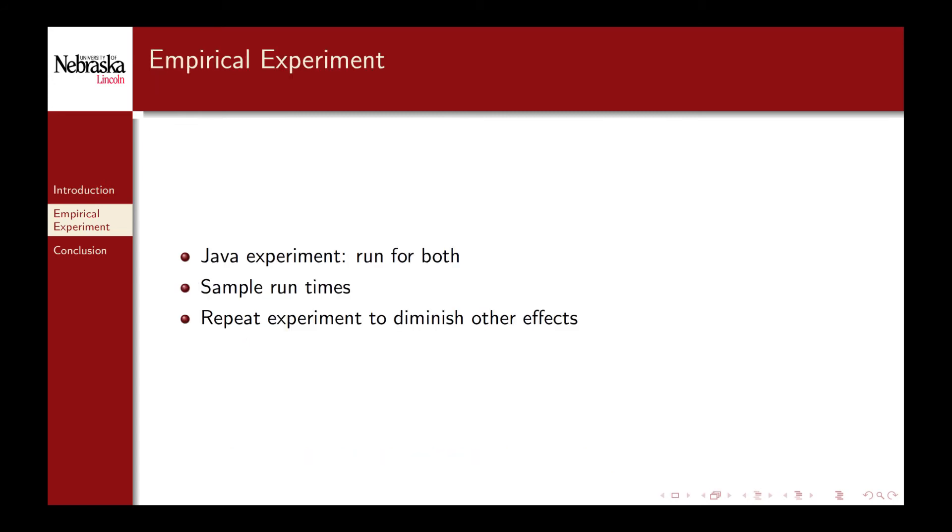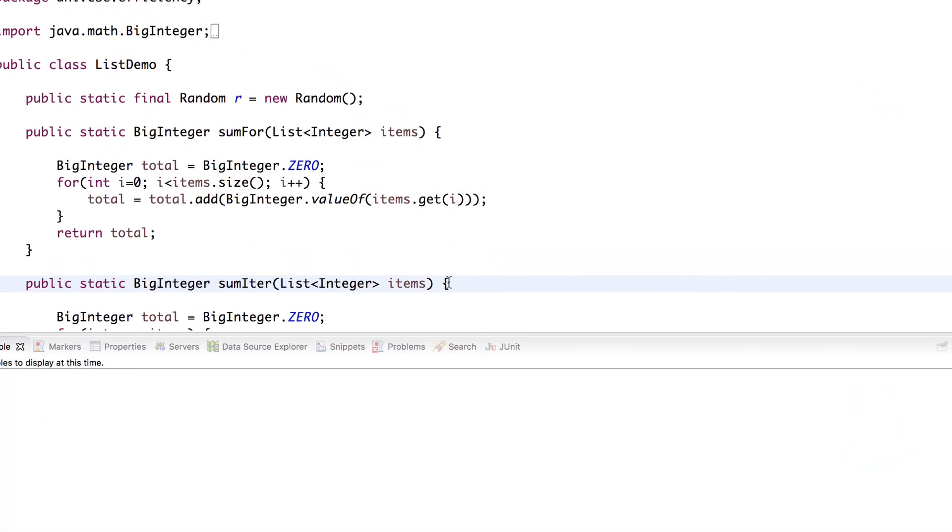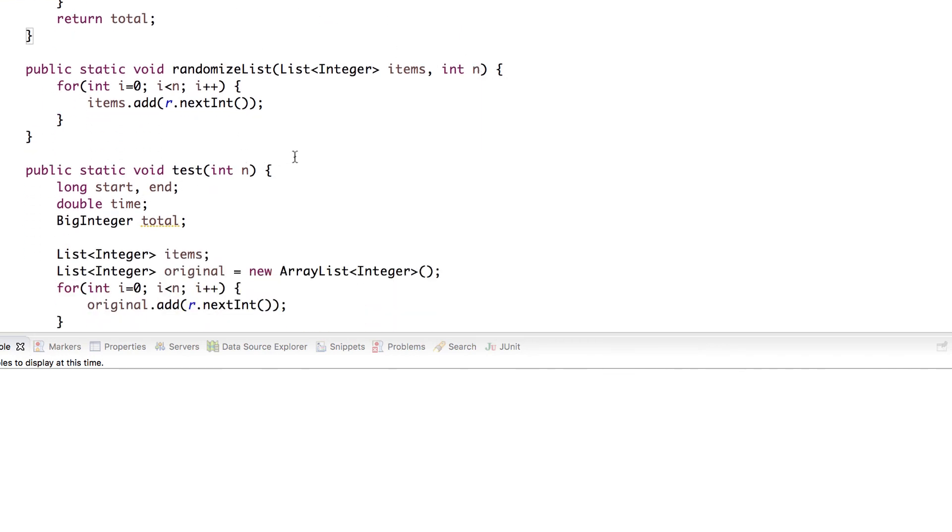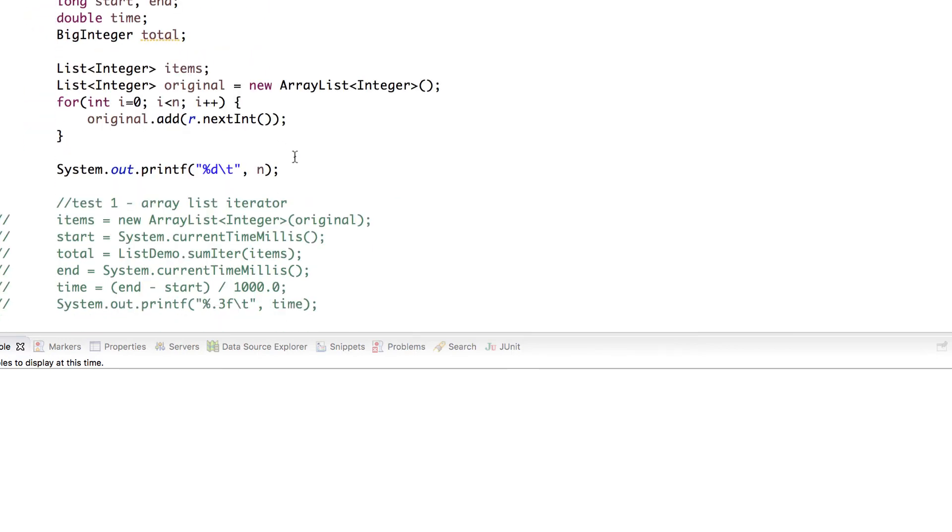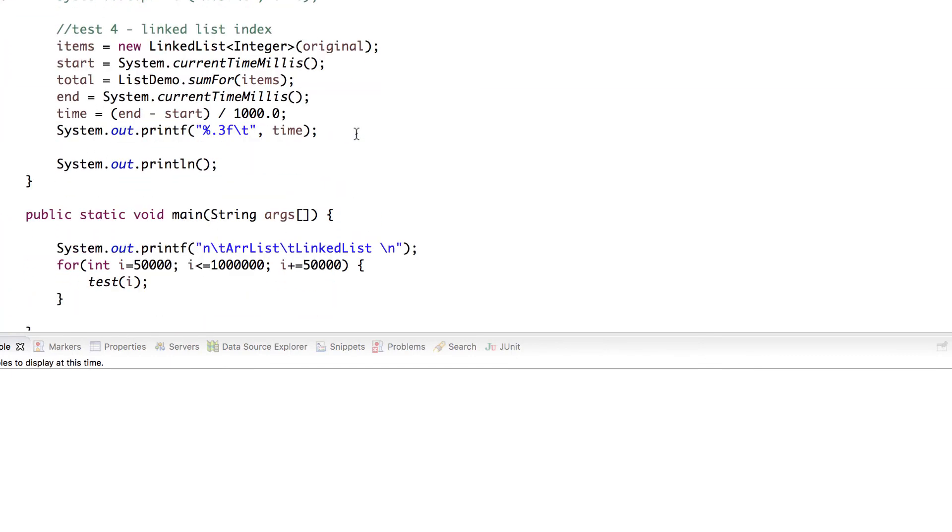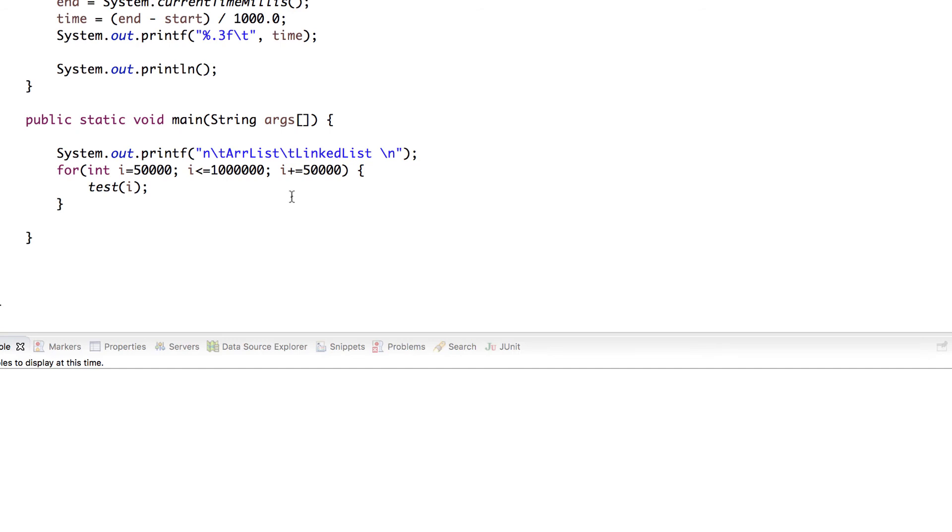I've set up an experiment in Java. We'll run the code for various input sizes and sample the run times for each. In practice you would need to run this experiment many times and take an average to diminish the influence of other factors. I've set up the demonstration here. Each test randomly generates a list of a certain size.